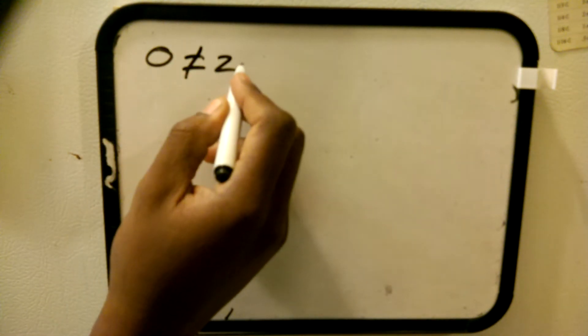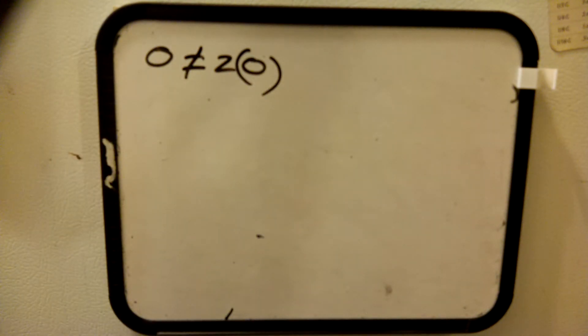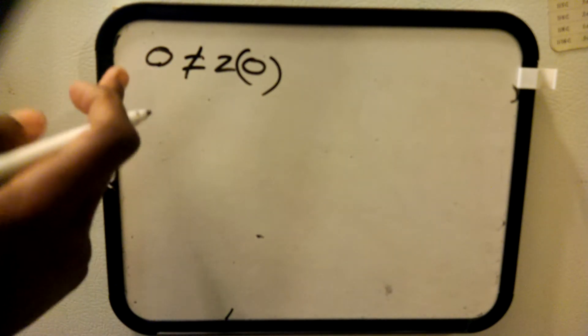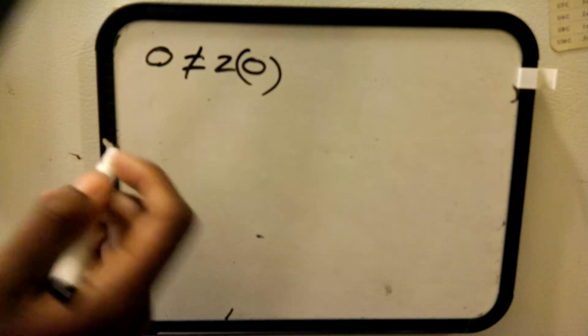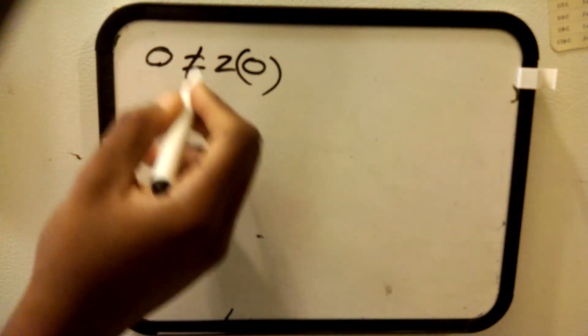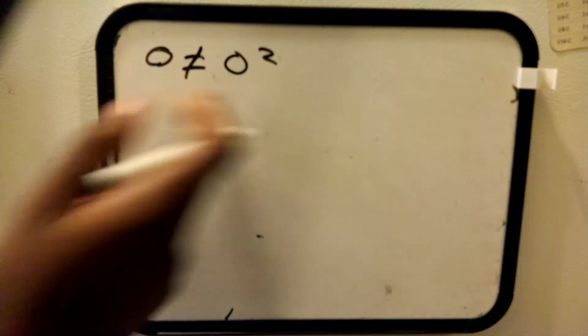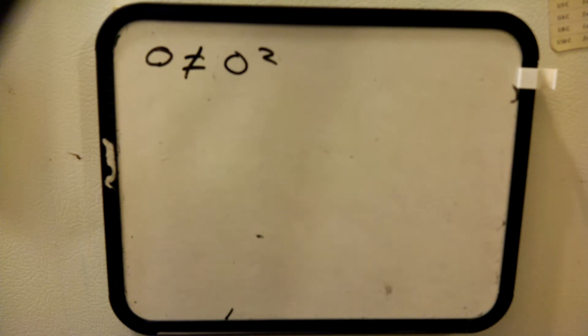Okay guys, this is going to be a proof that proves that 0 does not equal 2 times 0 — or the same thing as 0 doesn't equal 3 times 0. Every 0 is unique. If this 0 is here, it is not equal to, for example, the square root of 0, or 0 squared. These are not equal, and I'm going to prove that so you can understand how to divide by 0. That's why we're messing up in our division by 0 — because we don't understand what 0 really is.